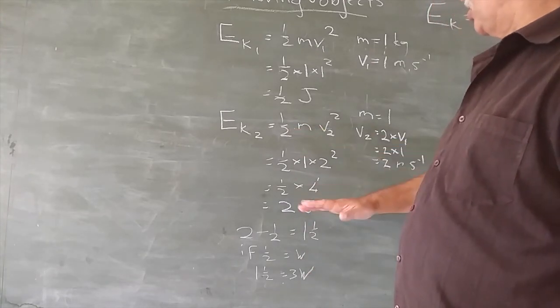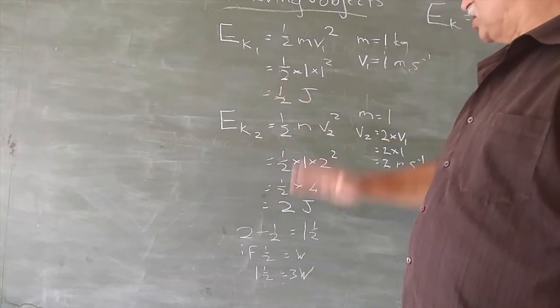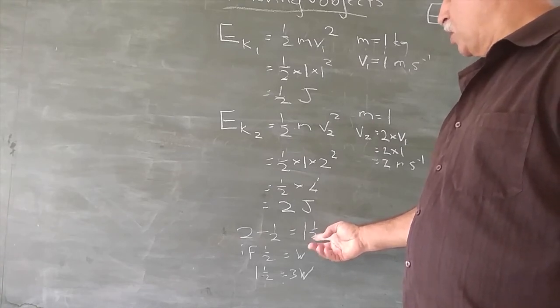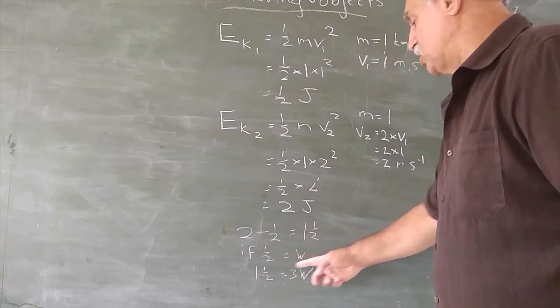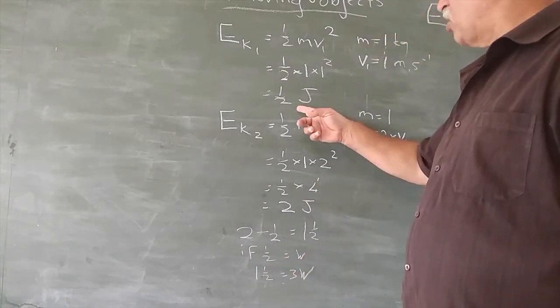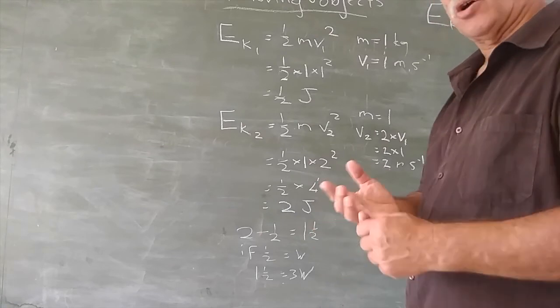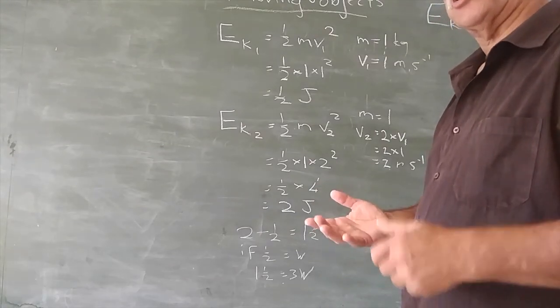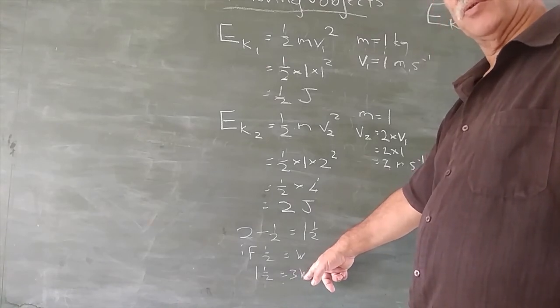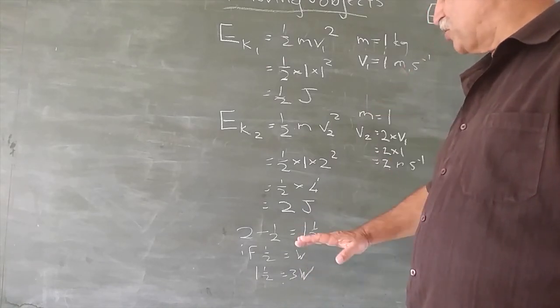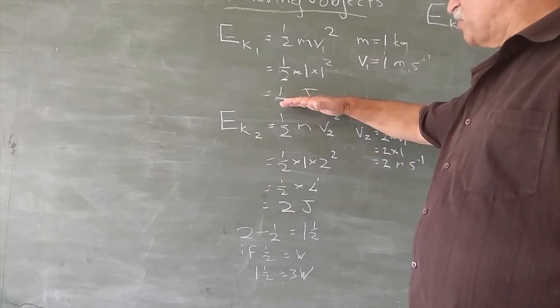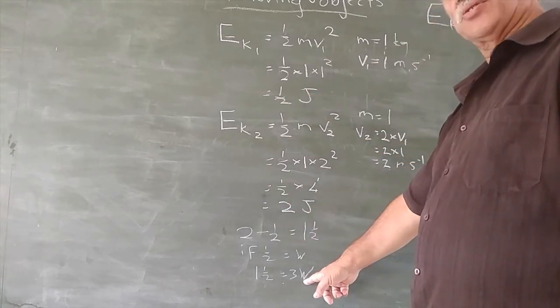To find the increase, you take the final minus the initial: 2 - 1/2, which is 1.5. But if the original 1/2 was W, then 1.5 equals an increase of 3W. It goes from 1/2, plus 1/2 is 1, plus another 1/2 is 1.5, plus another 1/2 is 2. The increase has been 3W. Don't be confused—this one has 4 times as much as that one, but the increase is 3W.